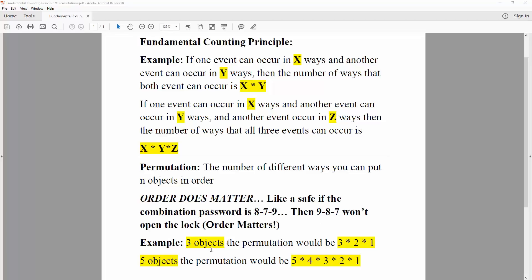For example, if we have three objects, the permutation would be 3 times 2 times 1. It's just a factorial. Five objects, it would be 5 times 4 times 3 times 2 times 1. And in the next video, we will solve actual problems.